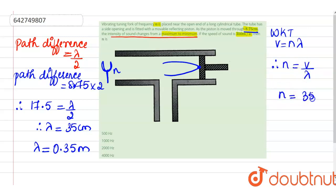so N will be equal to 350 divided by 0.35 which is equal to 1000 hertz. So this tuning fork is vibrating at a frequency of 1000 hertz. Thank you.